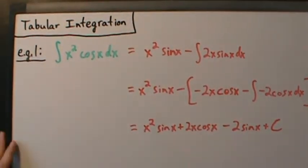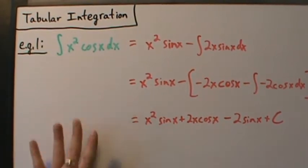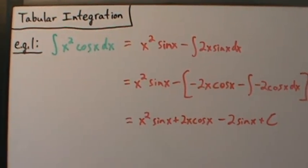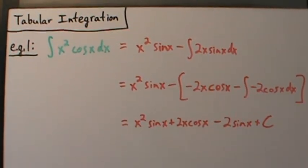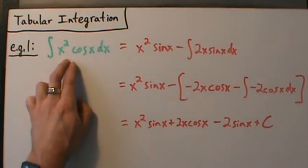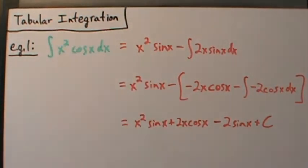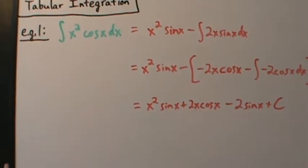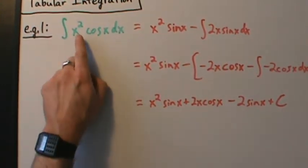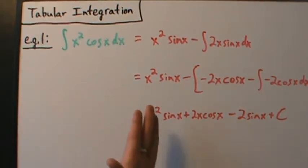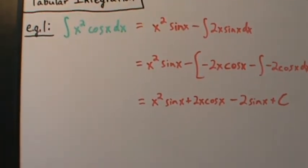So what we're going to do is talk about how to use tabular integration to make this process go more quickly. We'll see that if we had something like x to the 5th, you would do integration by parts five times, which would be terrible. But with tabular integration, it's relatively simple.